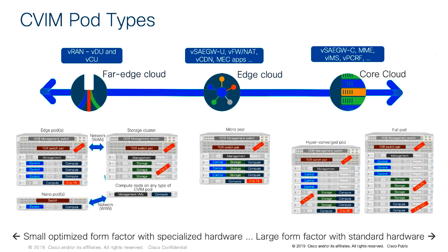Moving toward the middle, there are use cases for more, smaller pods — typically closer to the edge, meaning closer to the source of user traffic. With these micro pods, we reduce the hardware footprint for more optimization. In a micro pod, we collapse the control, storage, and compute plane onto the same server, but still use three of each to maintain HA, redundancy, and reliability that you expect in telco networks where everything needs to remain up no matter what.